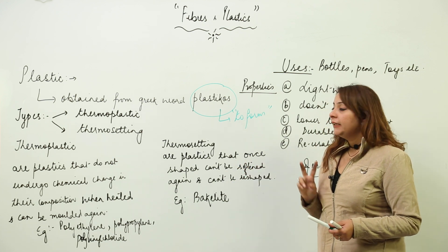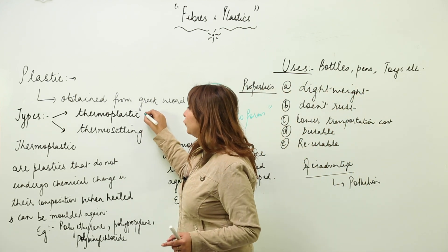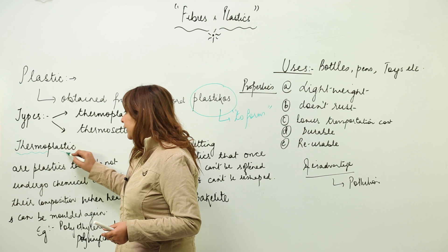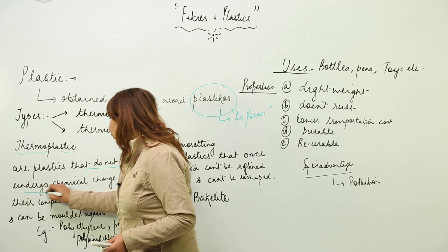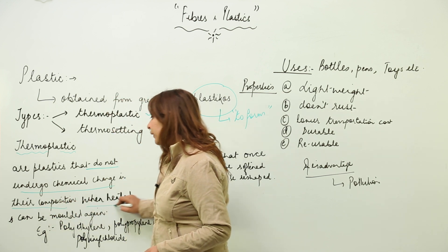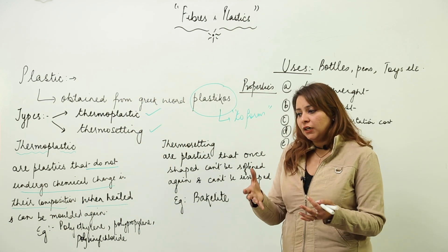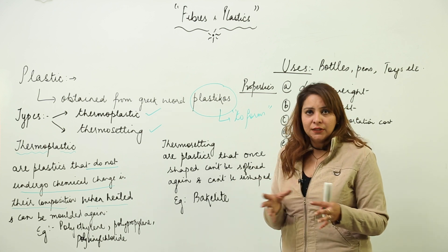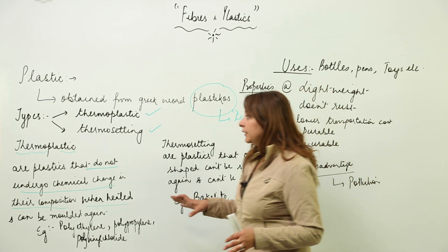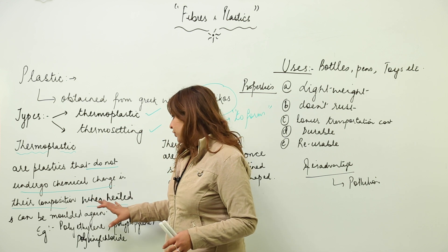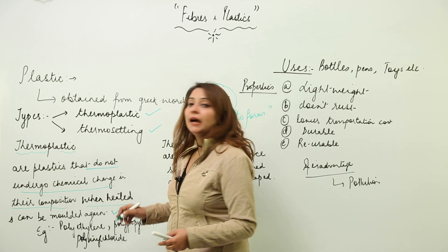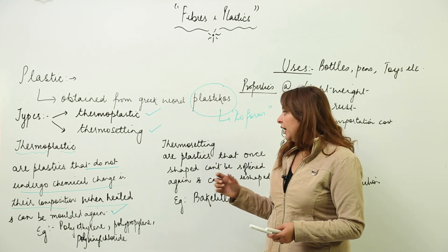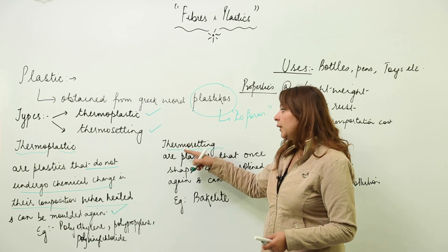There are two kinds of plastics: thermoplastic and thermosetting. Thermoplastics are plastics that do not undergo any chemical change in their composition when heated. That means they can be molded again and again and you can change their shape repeatedly.